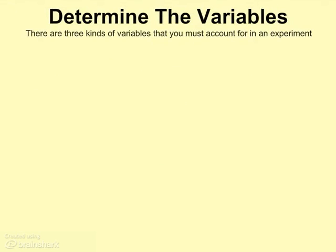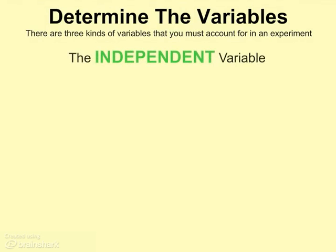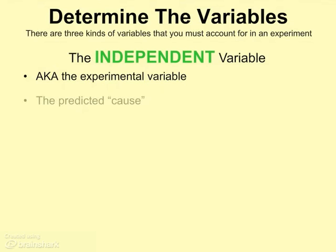In a scientific experiment, there are basically three different types of variables that have to be accounted for, and we need to be able to describe those variables when evaluating any experiment. One of those variables is referred to as the independent variable, and sometimes it is also referred to as the experimental variable — we can use these two terms interchangeably. The independent variable is the thing that we are predicting to be the cause in our cause and effect relationship.